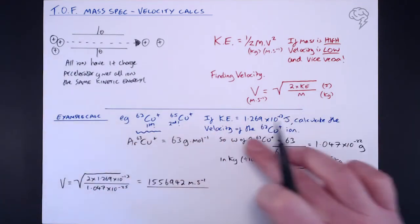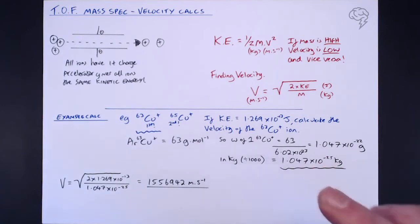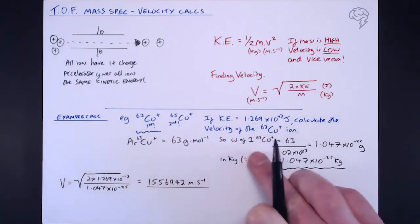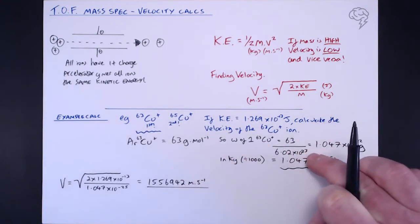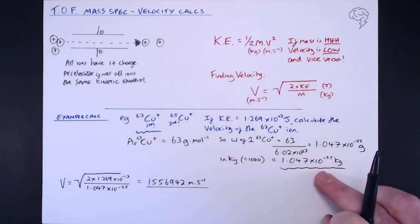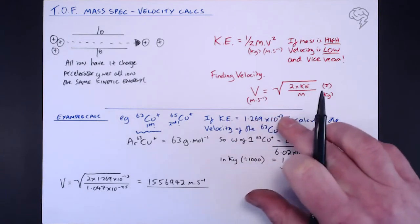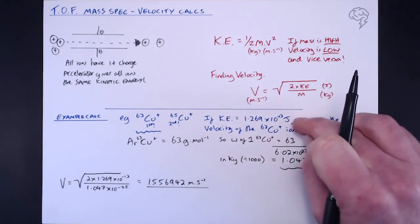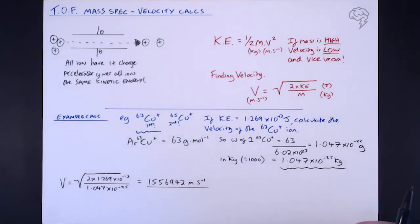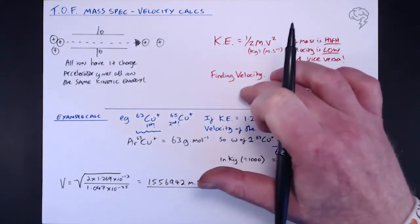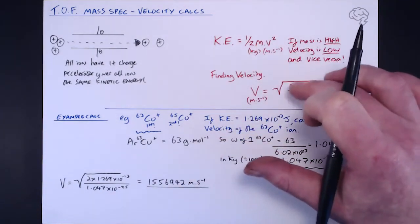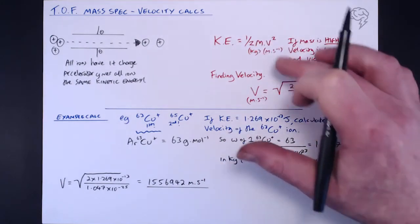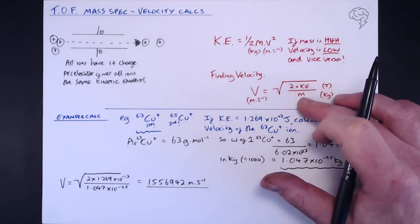So that's how we find the velocity of a single isotope. First, find the mass in kilograms of a single isotope: divide the relative atomic mass in grams per mole by Avogadro's constant, then divide by 1000 to convert to kilograms. Then you'll be given the kinetic energy — make sure it's in joules — and plug both values into the velocity equation. You do need to remember these two equations as they're unlikely to be given in the question.